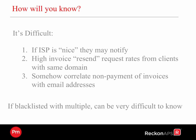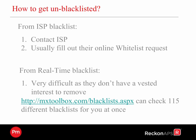How will you know if you've been blacklisted? In short, it can be difficult. If your ISP is nice, they will notify you. If you have a high invoice resend request rate from clients with the same domain, that could be a clue. Somehow you need to correlate your non-payment of invoices or any communication from the client associated with your email address. If you're blacklisted with multiple ISPs, it can be very difficult to know. How to get un-blacklisted: if you're blacklisted from an ISP blacklist, the first thing you'll need to do is contact your ISP and usually fill out an online whitelist request — it's not something you can manage without your ISP's help. If you find you're blacklisted from a real-time blacklist, it can be very difficult. There are some toolboxes out there that can check 115 different blacklists for you at once. In essence, you should contact your ISP for assistance.